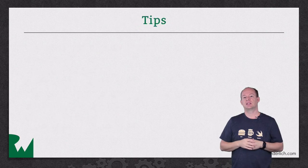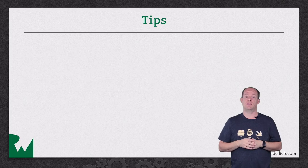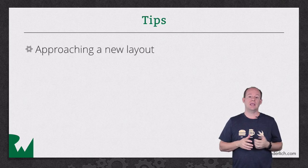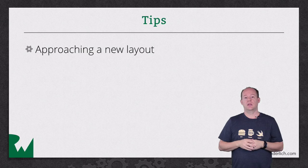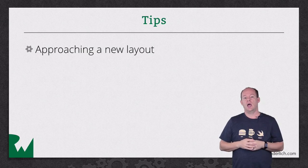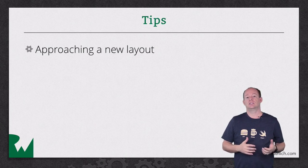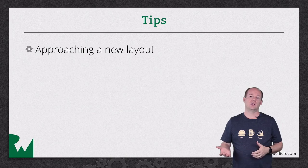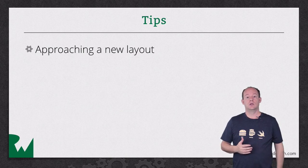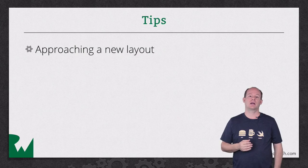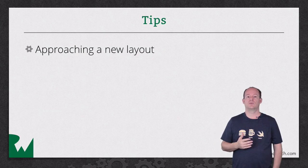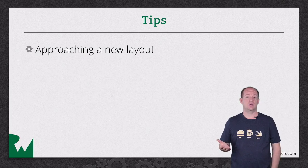Just a couple of tips I'd like to leave you with before we wrap this series up. First, when I get a new design and I'm starting to implement it, the first thing I do is try to decompose it into groups. I try to avoid creating constraints with explicit widths or heights. I look for the most likely things to change, then I create constraints to group those views together so that if those changes happen, it has the minimum impact on my layout. Of course, with UI Stack View, you can use it to group views together and make those changes easier to handle as well.